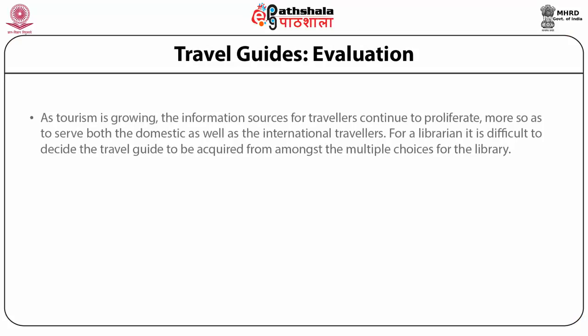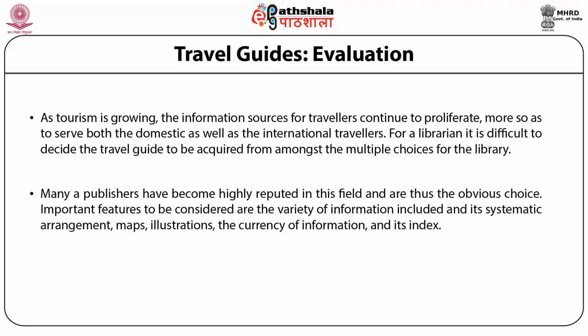With tourism becoming a big industry, travel guides continue to proliferate rapidly. Travel information sources of wide variety and quality are being produced, covering both domestic and international travelers. This makes it difficult for the librarian to decide which source to acquire from multiple choices. Getting guides for many regions and maintaining balanced collection development is always a challenge. Many publishers are highly reputed in this field. Important features to consider are the variety of information included, its systematic arrangement including maps and illustrations, the currency of information, and its index. Currency and accuracy of information are essential so that travelers are not misled.